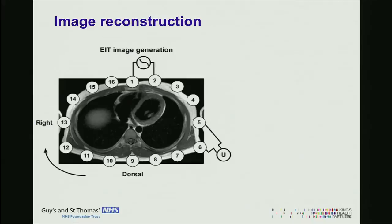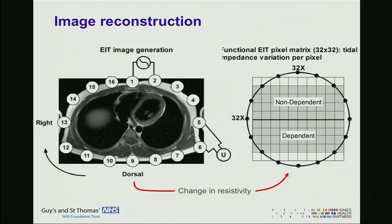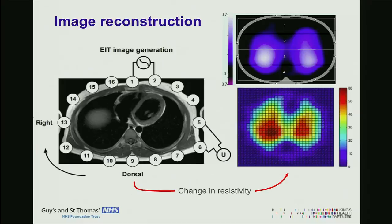Once all the resistivity measurements are performed, the EIT creates a 32 by 32 matrix. The whole lung field is divided into pixels, and each pixel has a value of resistivity which corresponds to a value of lung volume in that particular area of the lung. Through mathematical software, EIT generates an image scaled either as a color scale or a monochromatic scale, indicating change in resistivity from no change to maximal change. We can identify where this change in resistivity — and therefore volume — happens within the lung.